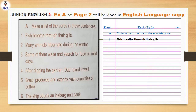Okay students, now let's move towards our classwork. For classwork, you have to open your Junior English 4. Open page number 2 of Junior English 4. You have to do exercise A of page number 2 in your English language copy. Let me read and explain the exercise, then you will have to do this exercise in your English language copy. Make a list of the verbs in these sentences.